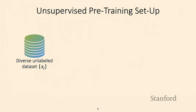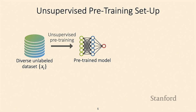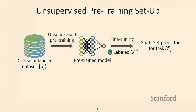Unlike meta-learning, the main data we'll have access to in unsupervised pre-training is a large unlabeled dataset — a large set of examples Xi without their corresponding labels. The goal of this unsupervised pre-training process is to take this unlabeled data and produce a pre-trained model such that when we fine-tune it on a much smaller labeled dataset, we can do well on our new task. You can think of this as the same setup as meta-learning, except instead of a large number of tasks, we have access to a diverse unlabeled dataset.